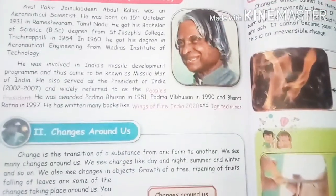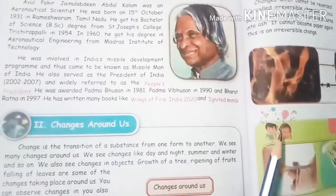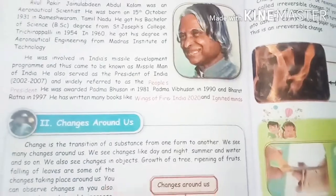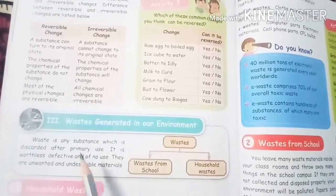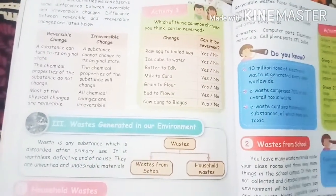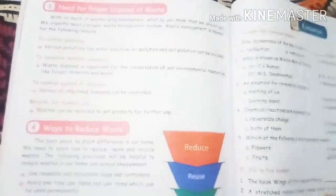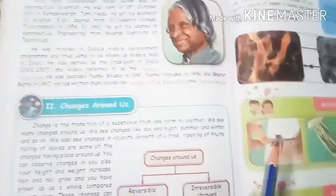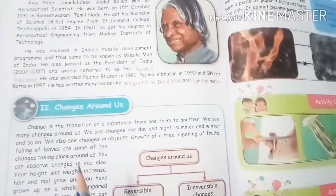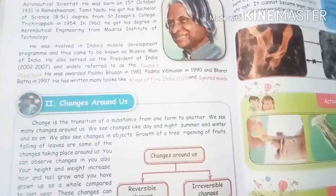We have learnt about two different scientists and changes around us — reversible and irreversible changes. The remaining topics are waste generated in our environment and book pack answers. Let us see these in the next video. Thanks for watching. If you like the video, please like, comment, share, and subscribe to our channel for further videos. Thank you. Have a nice day.